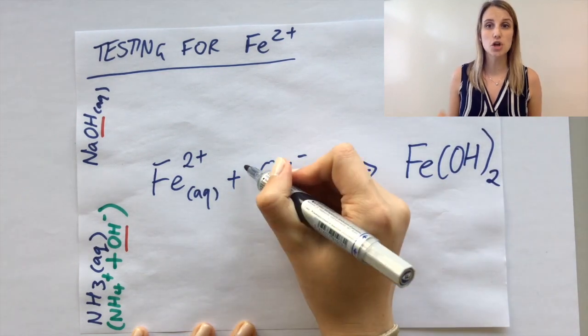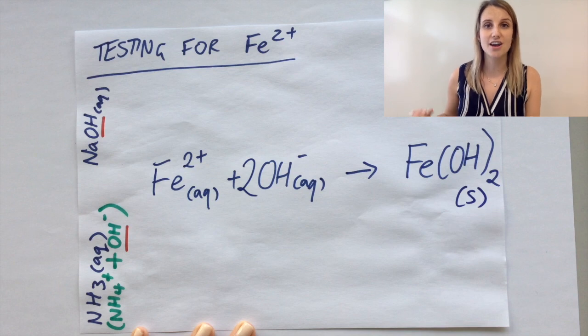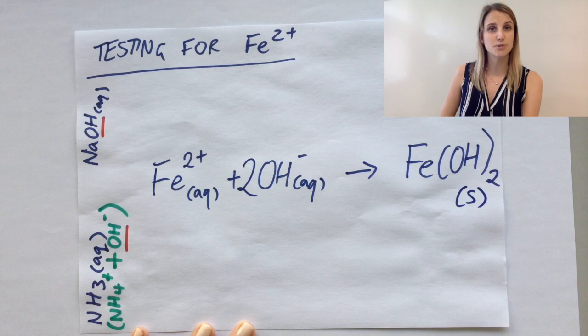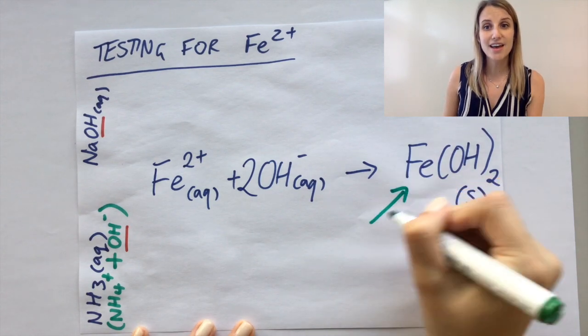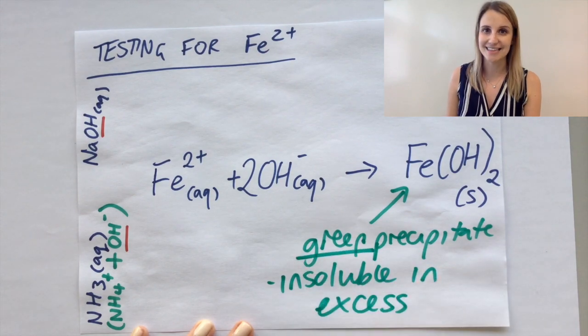The Fe2 plus reacts with the OH minus to produce iron hydroxide. The iron hydroxide is your solid product, that's the precipitate that we see, and that's your green precipitate that is insoluble in excess.